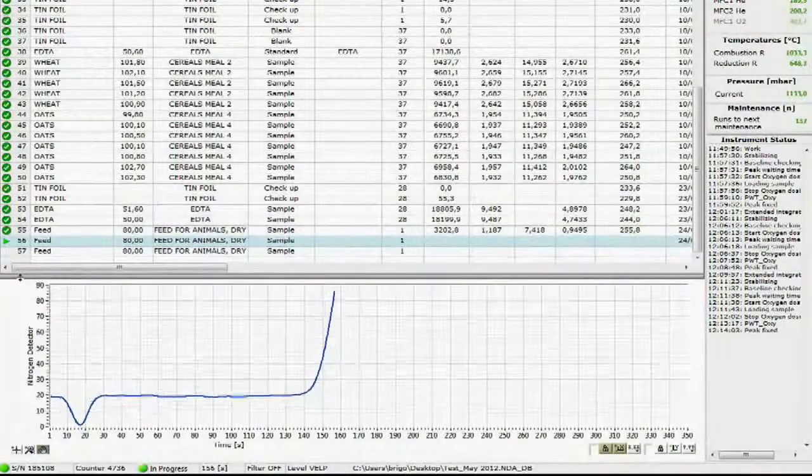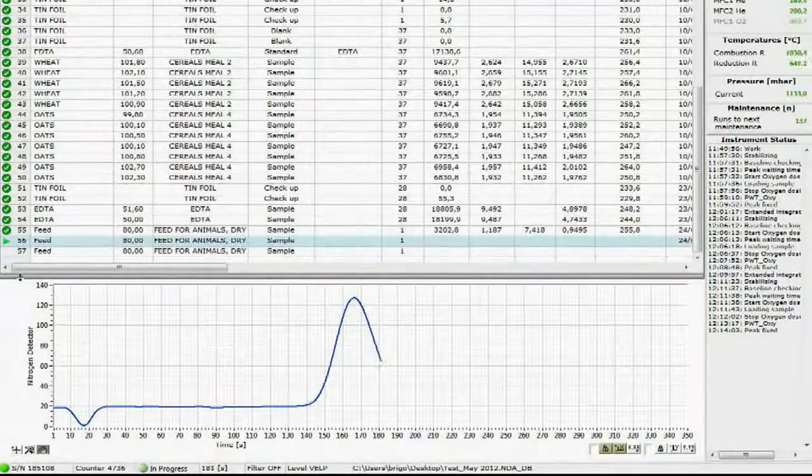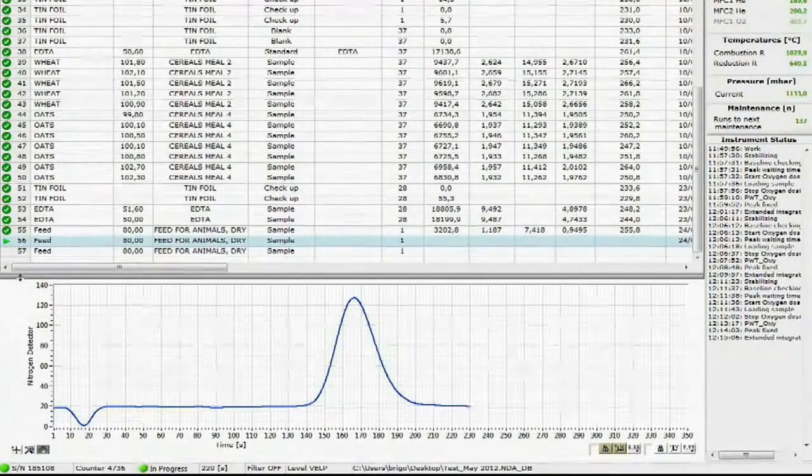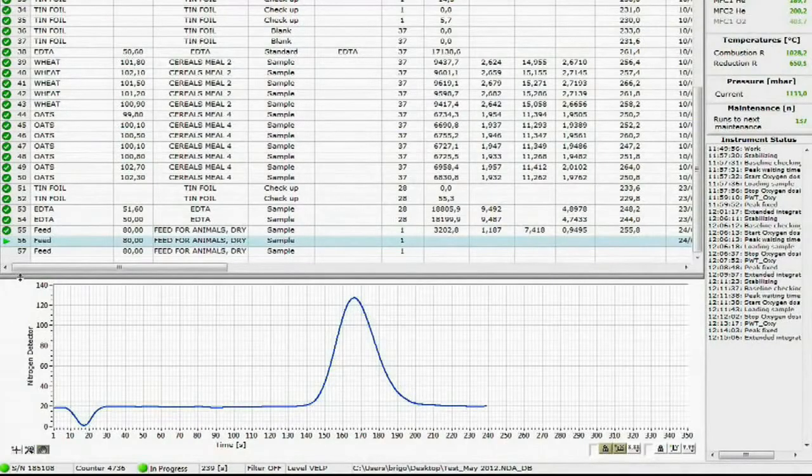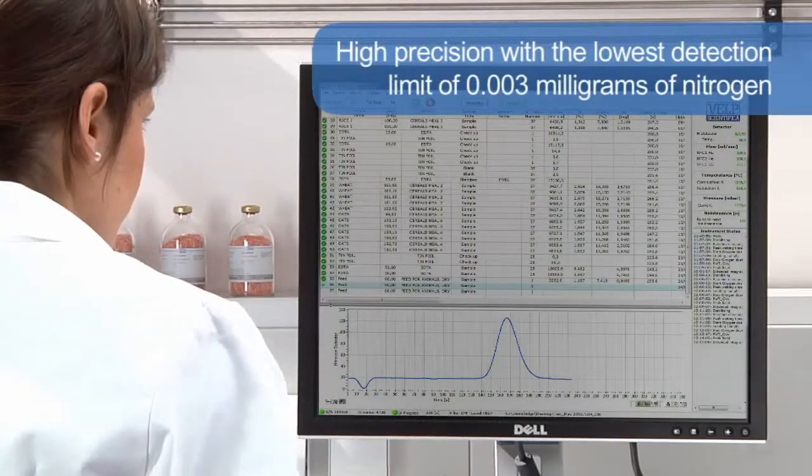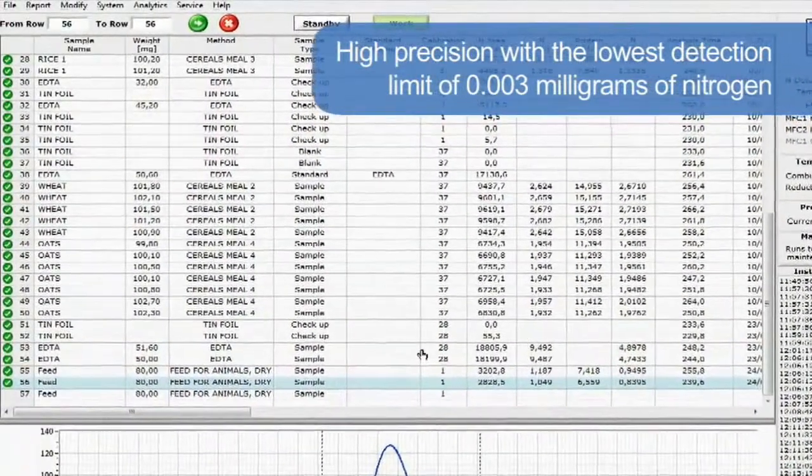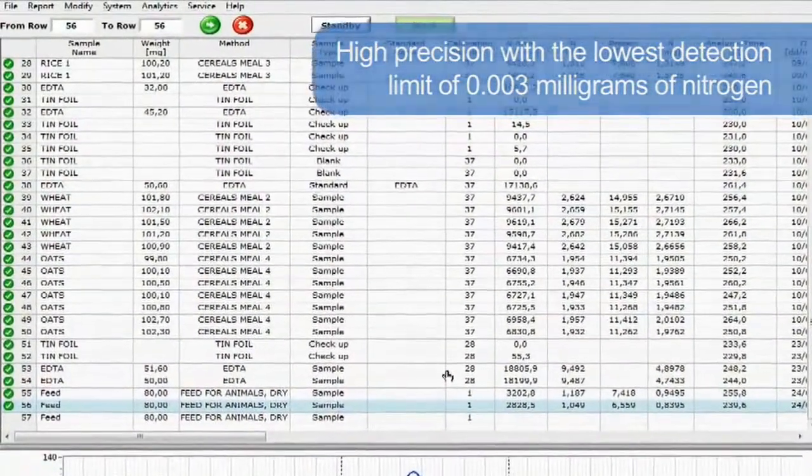The real-time graph shows the progress of the analysis, creating the peak as soon as the nitrogen starts reaching the thermal conductivity detector. The NDA701 provides the highest precision of any such analyzer on the market, with the lowest detection limit of 0.003 mg of nitrogen.